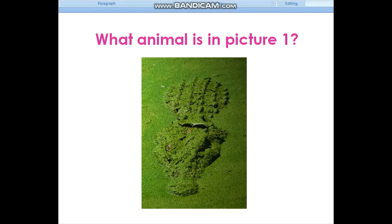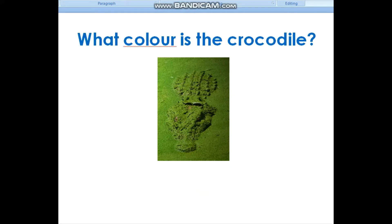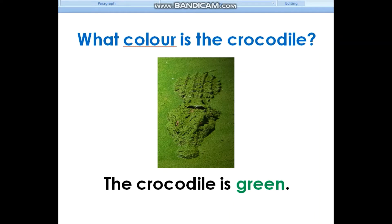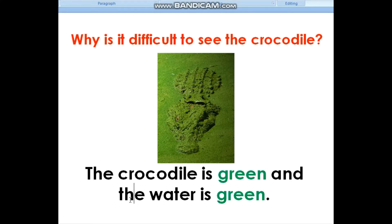Let's look at picture 1. What animal is in picture 1? There is a crocodile in picture 1. What color is the crocodile? The crocodile is green. Why is it difficult to see the crocodile? The crocodile is green and the water is green.